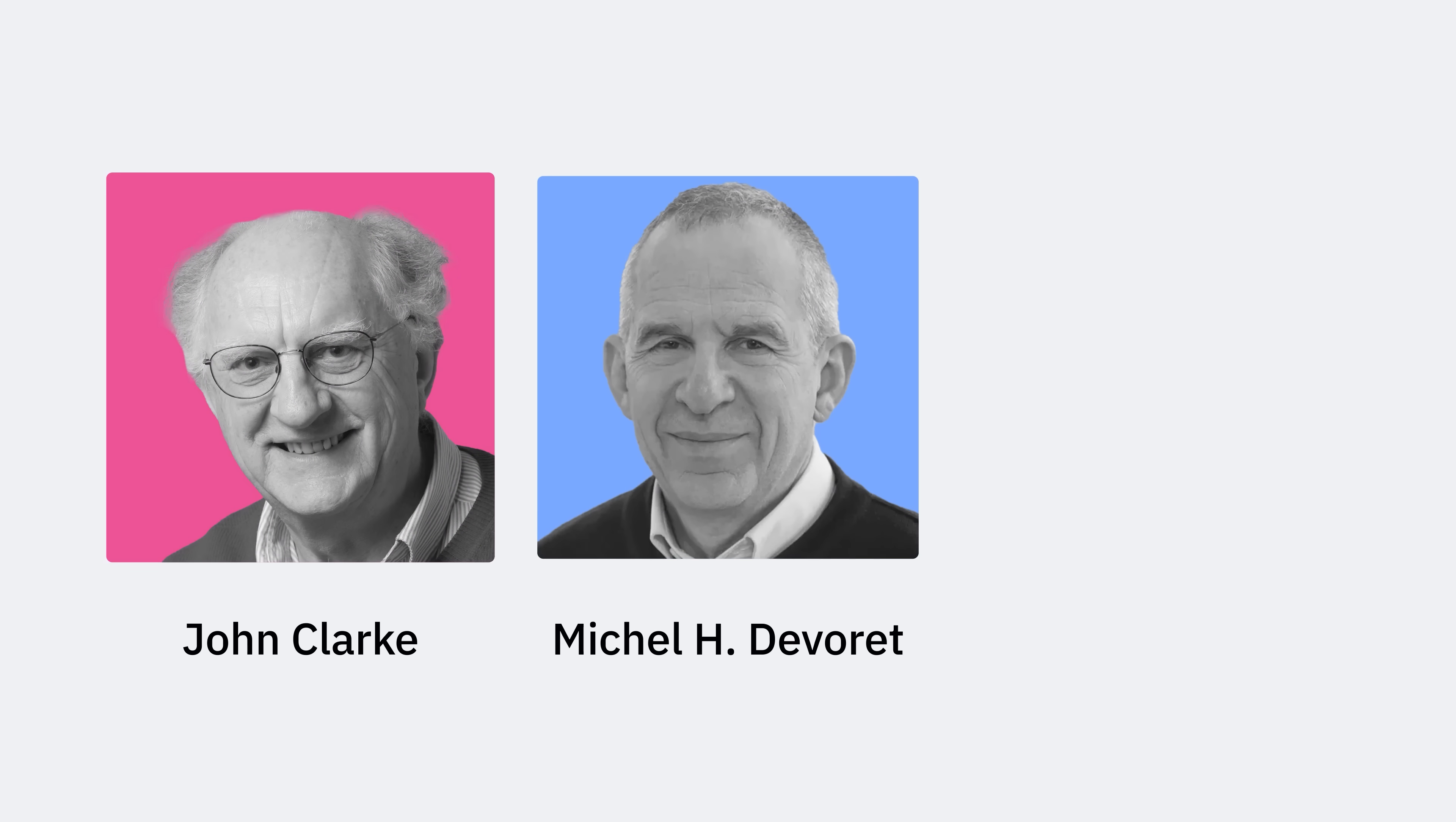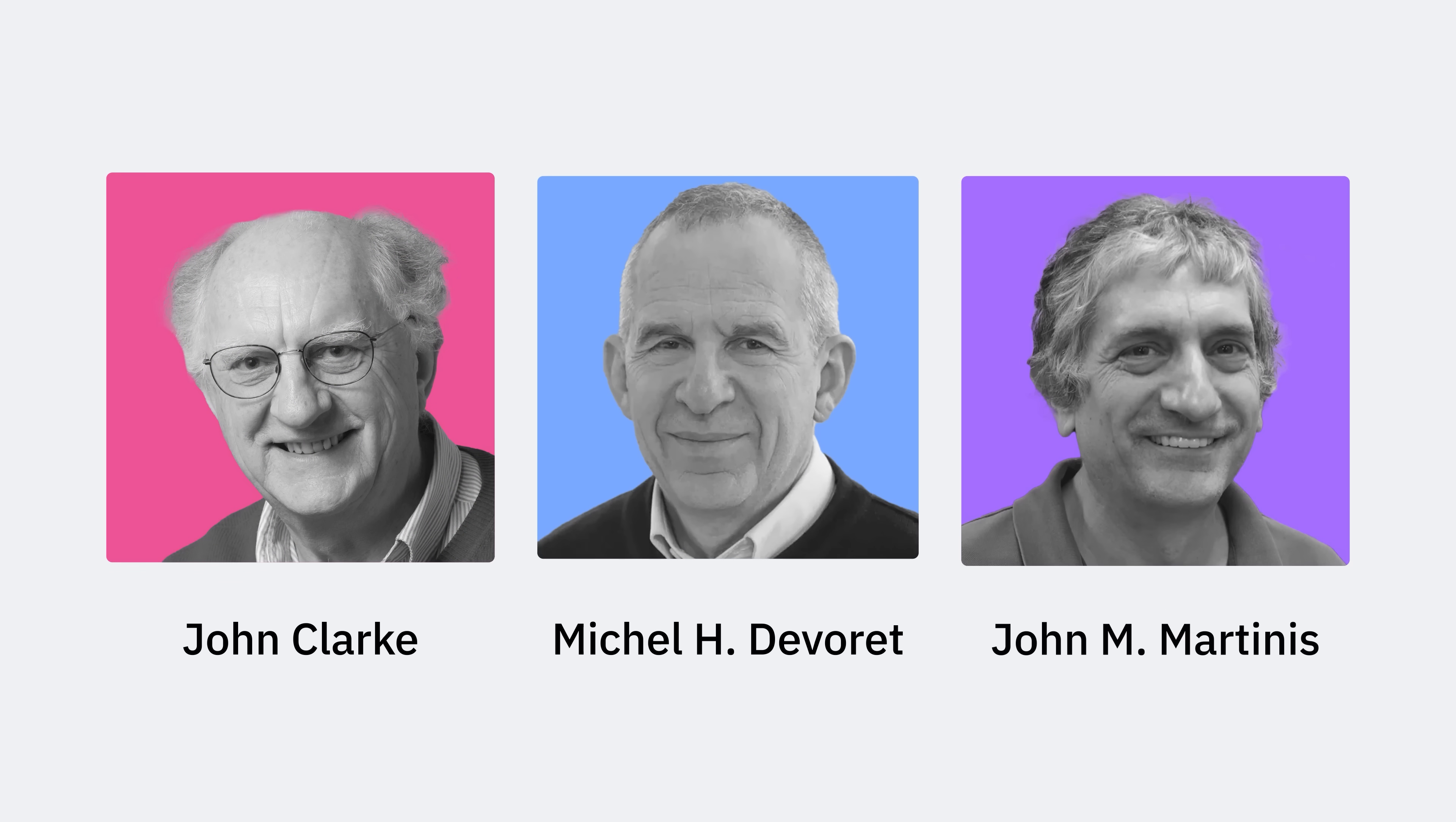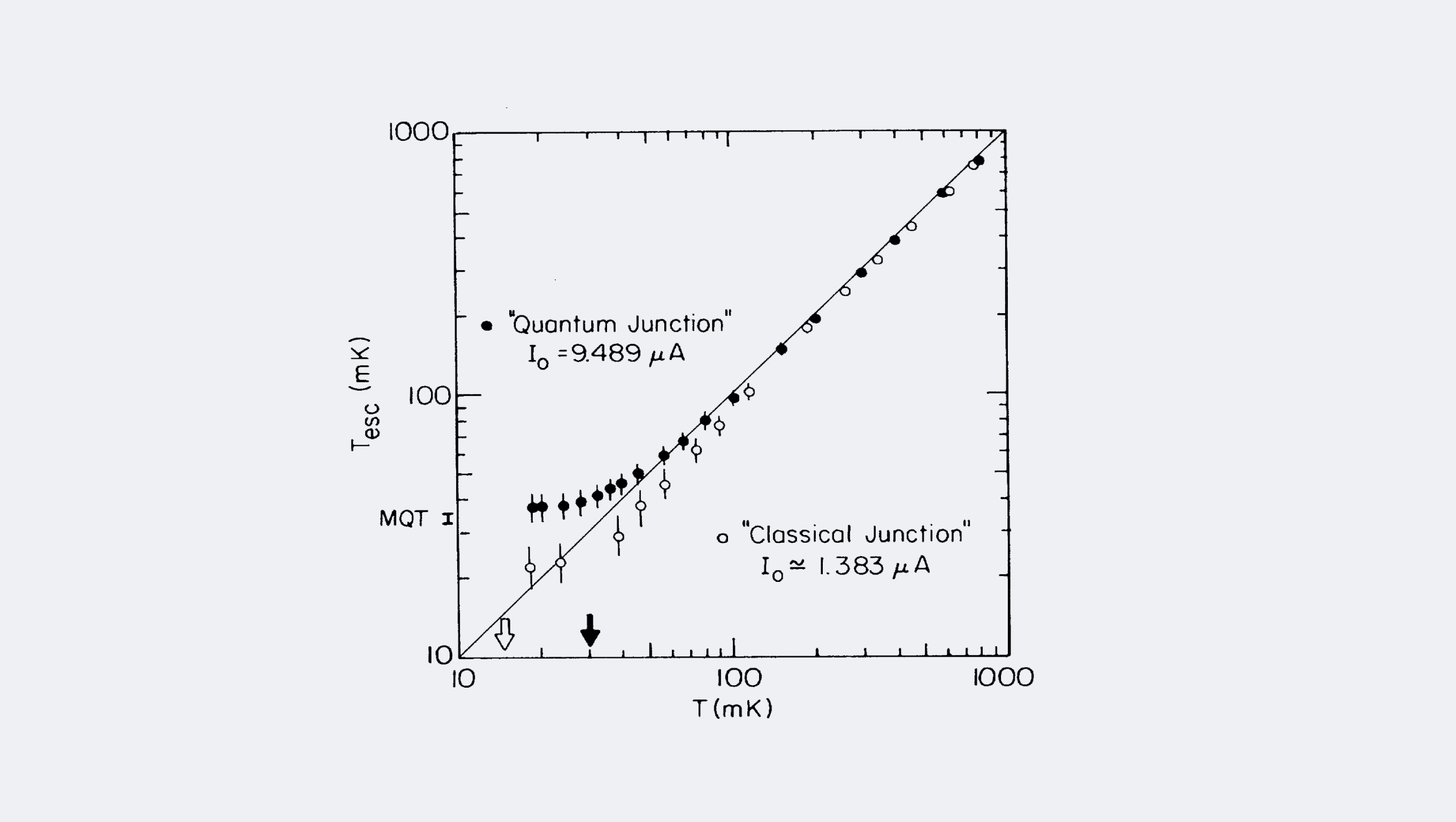And this is where Clark, Devereux, and Martinez made history. By biasing the junction just below its critical current, they observed spontaneous switching to the voltage state at temperatures too low for thermal activation to explain the escapes.